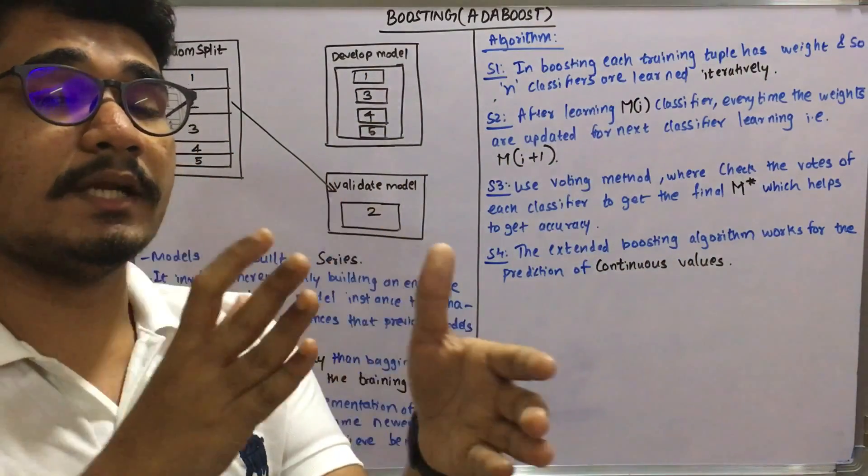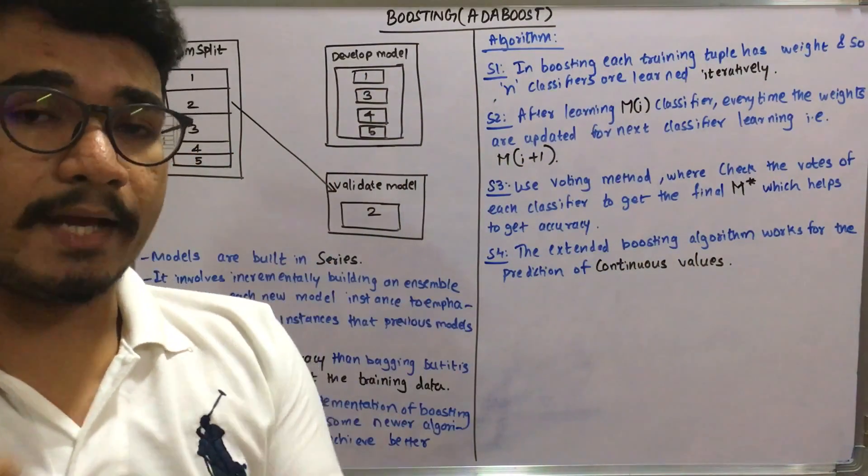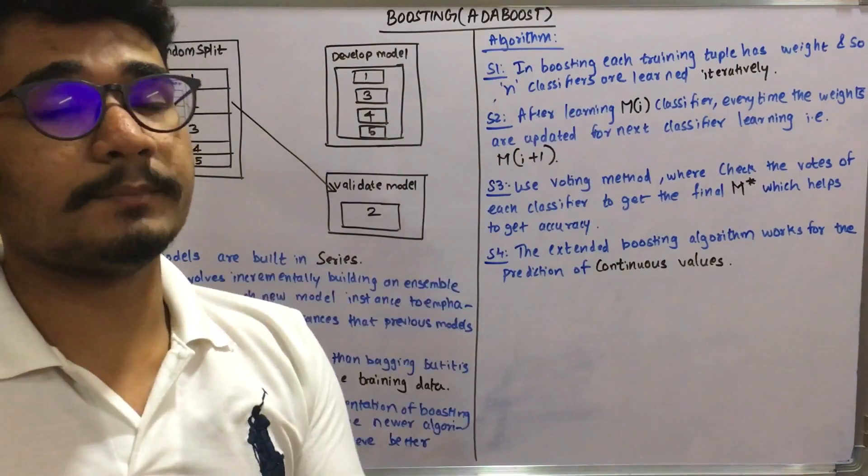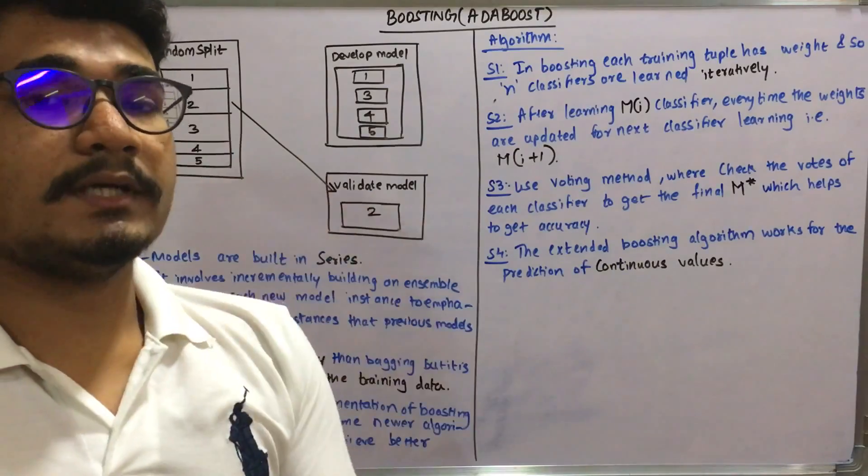According to the number of weights, the classifiers are laid out and then learned iteratively. At the very first step you don't do any kind of replacement like we saw in bagging, but it will learn them iteratively one by one.